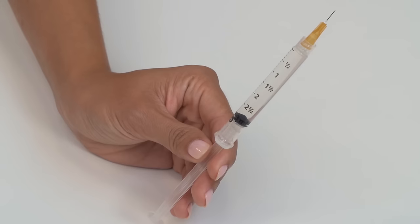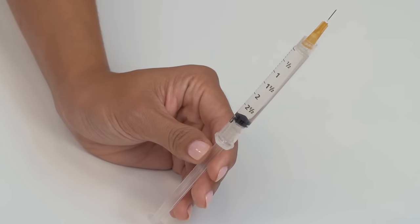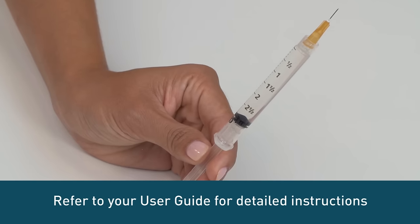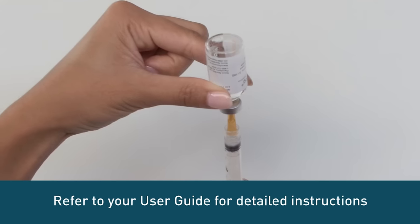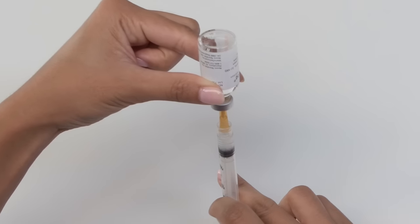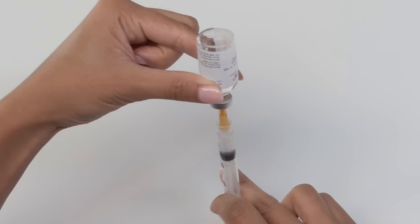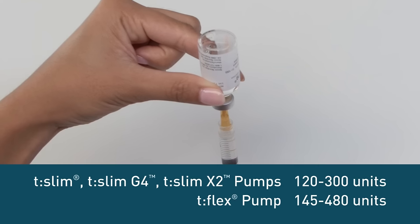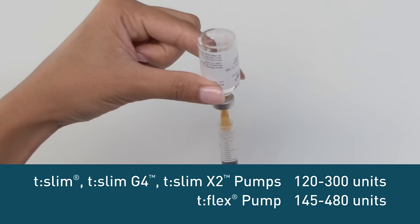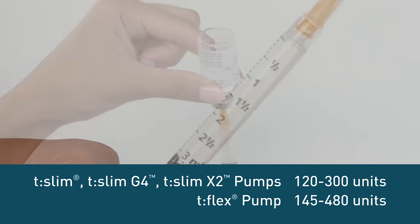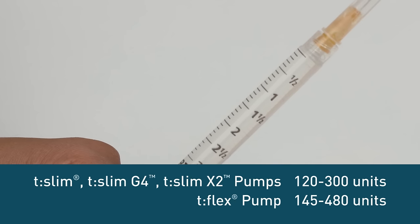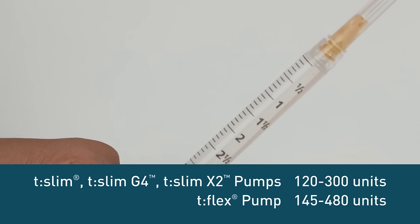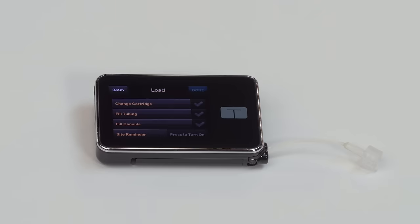We recommend using room temperature insulin to minimize the risk of air bubbles. Refer to your user guide for detailed instructions for drawing insulin from a vial. How much insulin you put in will be determined in conjunction with your healthcare team, but a good rule is to fill at least 120 units, but no more than 300 units for our T-Slim pumps and between 145 and 480 units for the T-Flex pump. Be aware that overfilling can damage your cartridge.